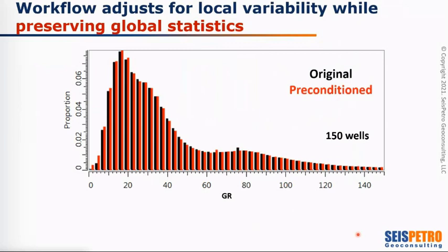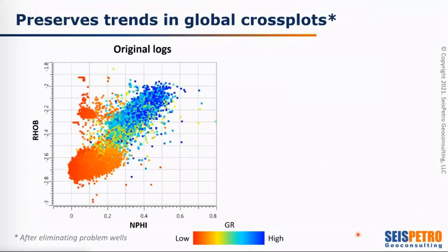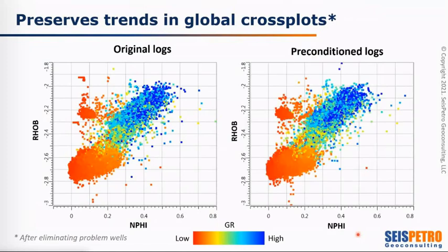One of the things this workflow tries to achieve is to preserve what we call the global statistics. When we look at the statistics of the original gamma ray versus the preconditioned gamma ray, the overall statistics are very similar, because here we're just trying to eliminate outliers and eliminate noise — we are trying to preserve the geology. The same thing is done when comparing the density versus neutron cross plot of the original logs versus the preconditioned logs. Both cross plots look very similar, because what we're really doing is moving some of the data inside the cross plots to the right place based on the geology.